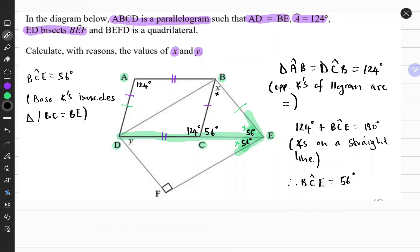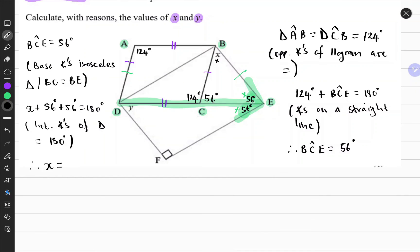Now it becomes easy to find angle x because by the property of sum of interior angles of a triangle adding up to 180 degrees, we can write that as follows. If we solve for x, we get x to be equals to 68 degrees.